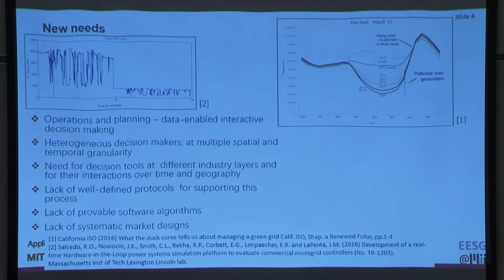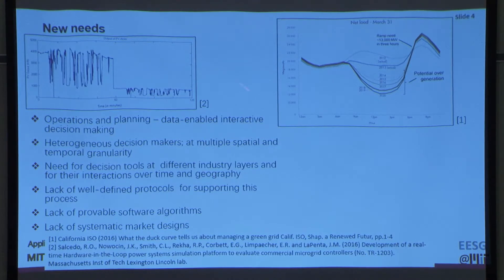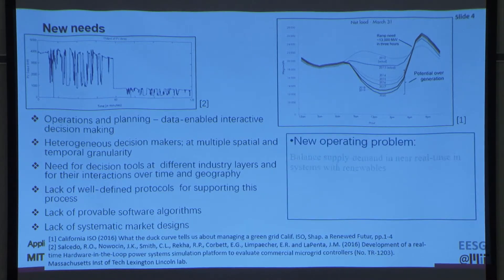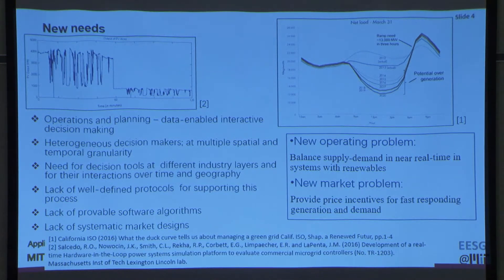There is increased penetration of solar and wind resources, creating a lot of ramping requirements. This figure shows the California ISO duck curve, where the ramp requirement is increasing every year. This is a sample plot of grid-scale solar PV when a cloud passes at noon, showing how fast the fluctuations are. This poses new operating problems — the operator must balance supply and demand in near real time — and also new market problems, as price incentives must be given for fast-responding generation or controllable demand.